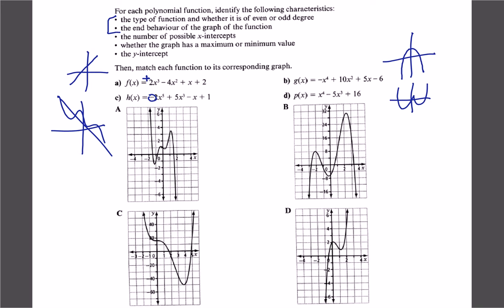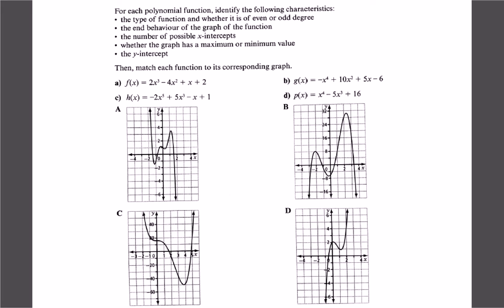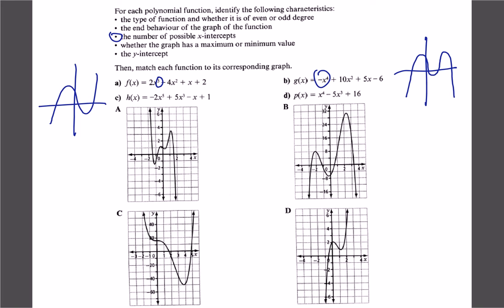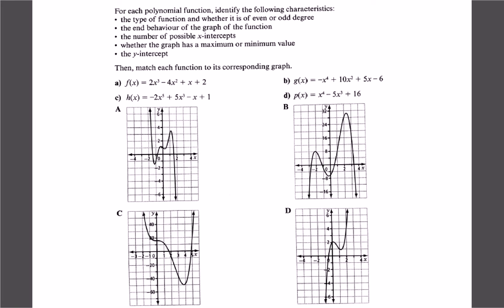Next, let's check the number of possible x-intercepts. A third degree could cross one, two, or three times. A fourth degree could cross zero, one, two, three, or four times. A fifth degree could cross up to five times. The last part asks if there's a max or min: if a graph goes up and down forever like odd degree functions, we say no max or min — those local peaks are only local maximums, not global ones.